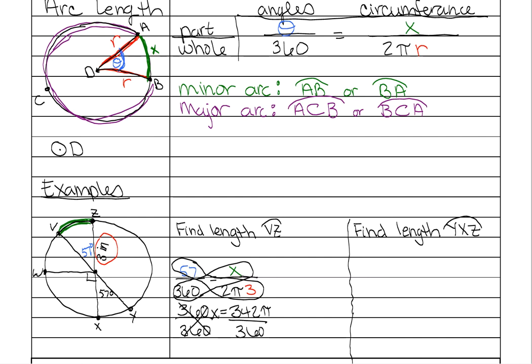And then you have to reduce this terrible fraction. But your calculator will do it for you. So if you do 342 divided by 360 in your calculator and then you hit math, enter, enter.